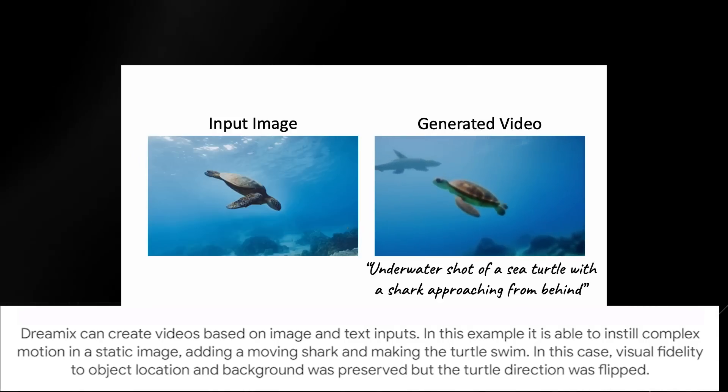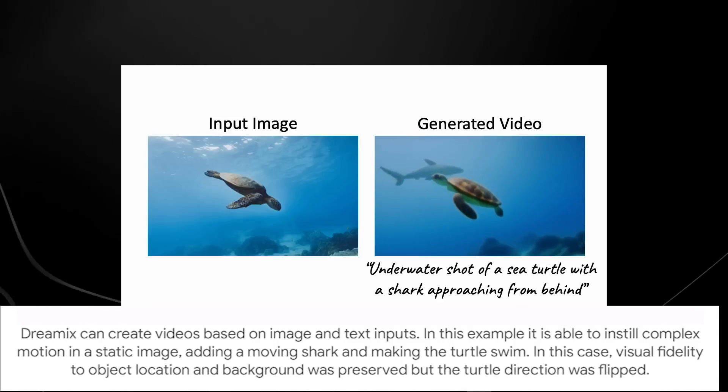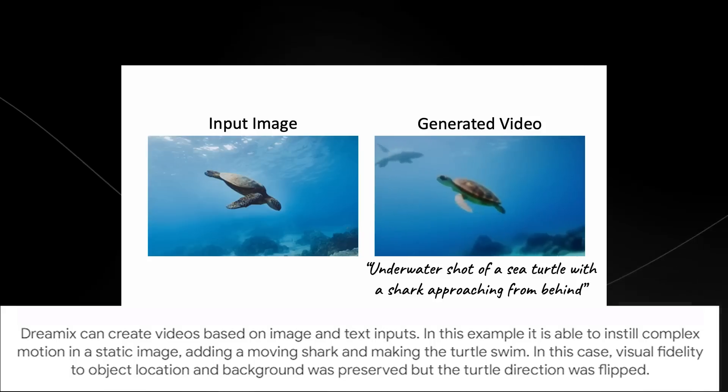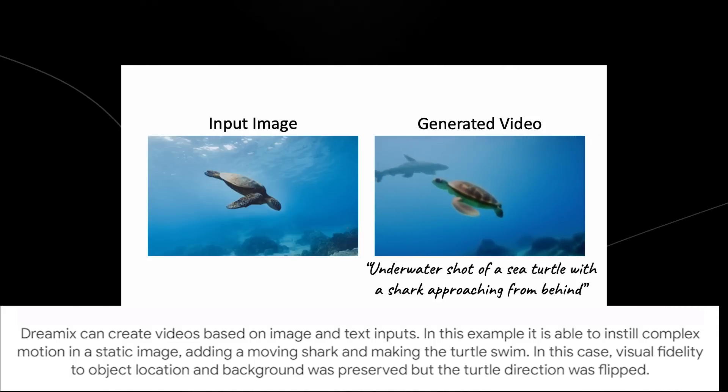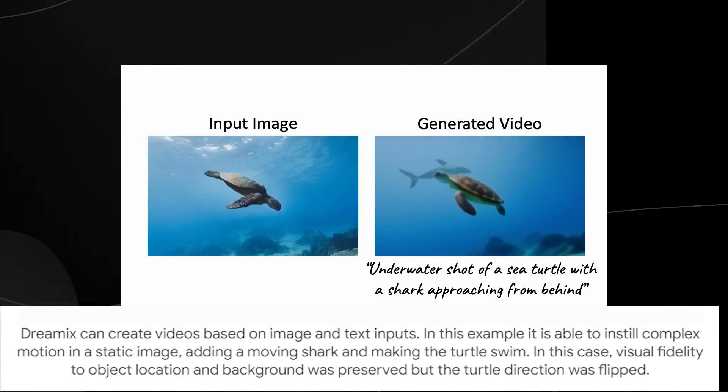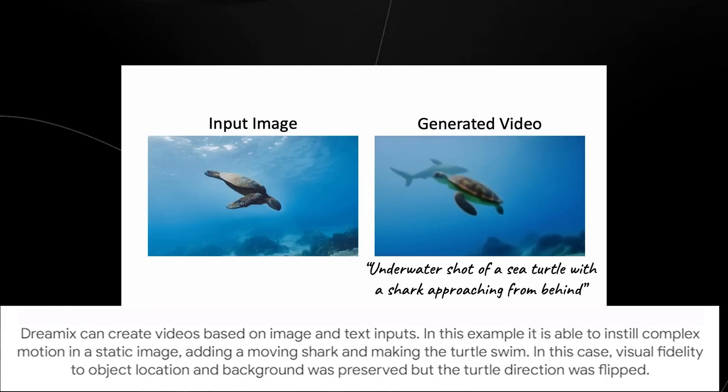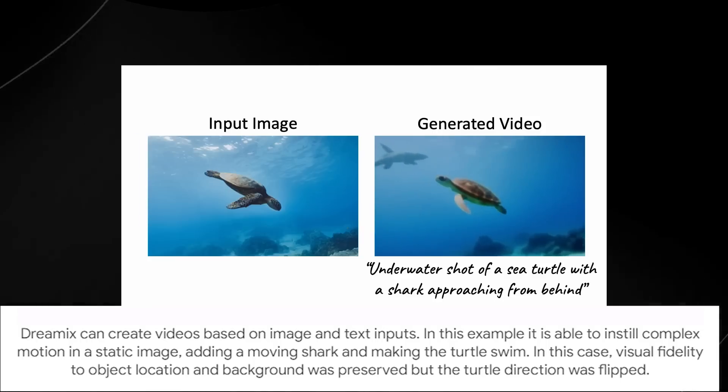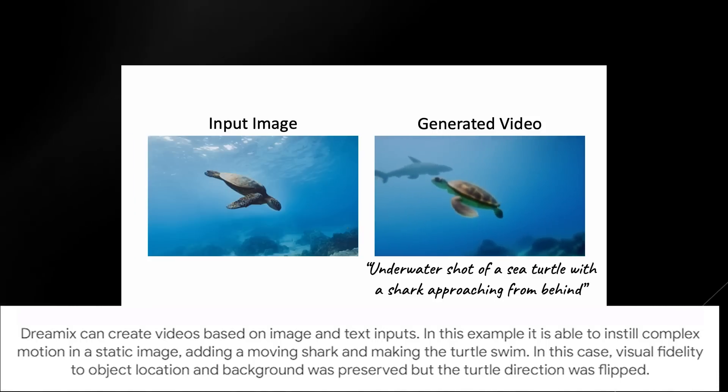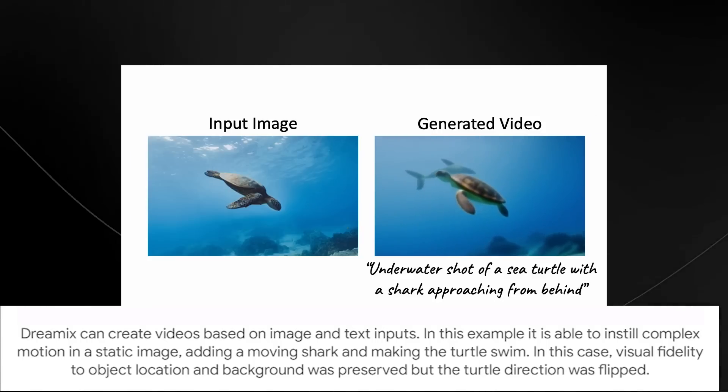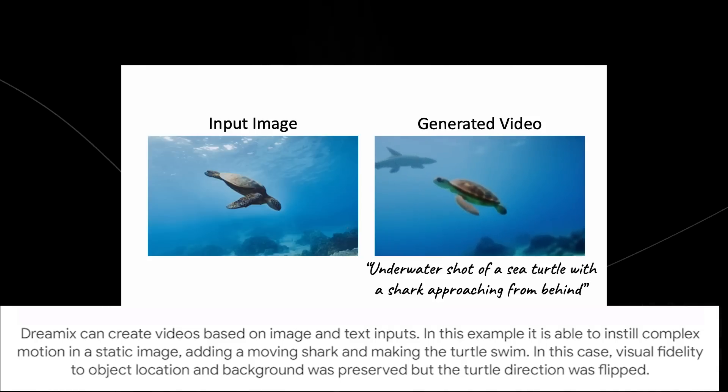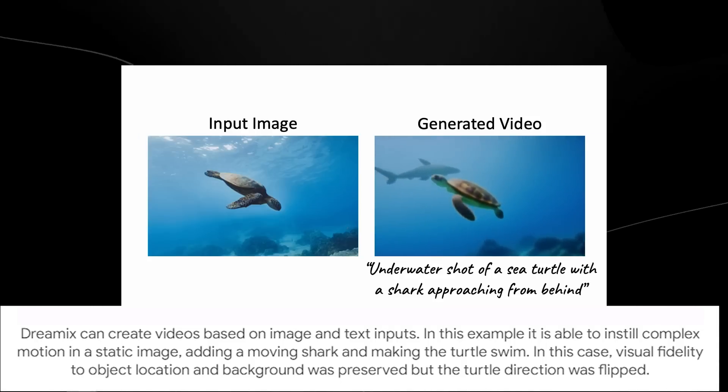You can see right here that this is another example. Dreamix can generate videos based on image and text inputs, so it can actually instill motion into a static image. And this is very different from text-to-video because this allows another level of manipulation. You can see right here this is just an image, but then they've changed it to say an underwater shot of a sea turtle with a shark approaching from behind.